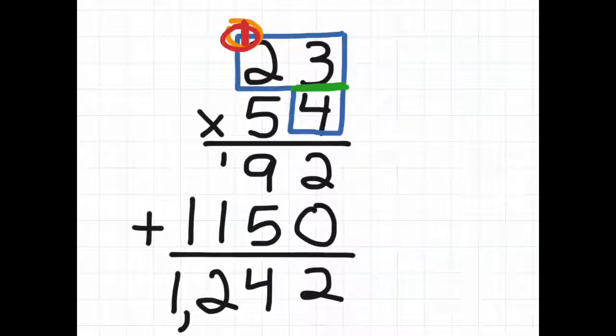And that is double digit multiplication the turtle method way. Thanks for watching. We'll see you next time on With Wes.